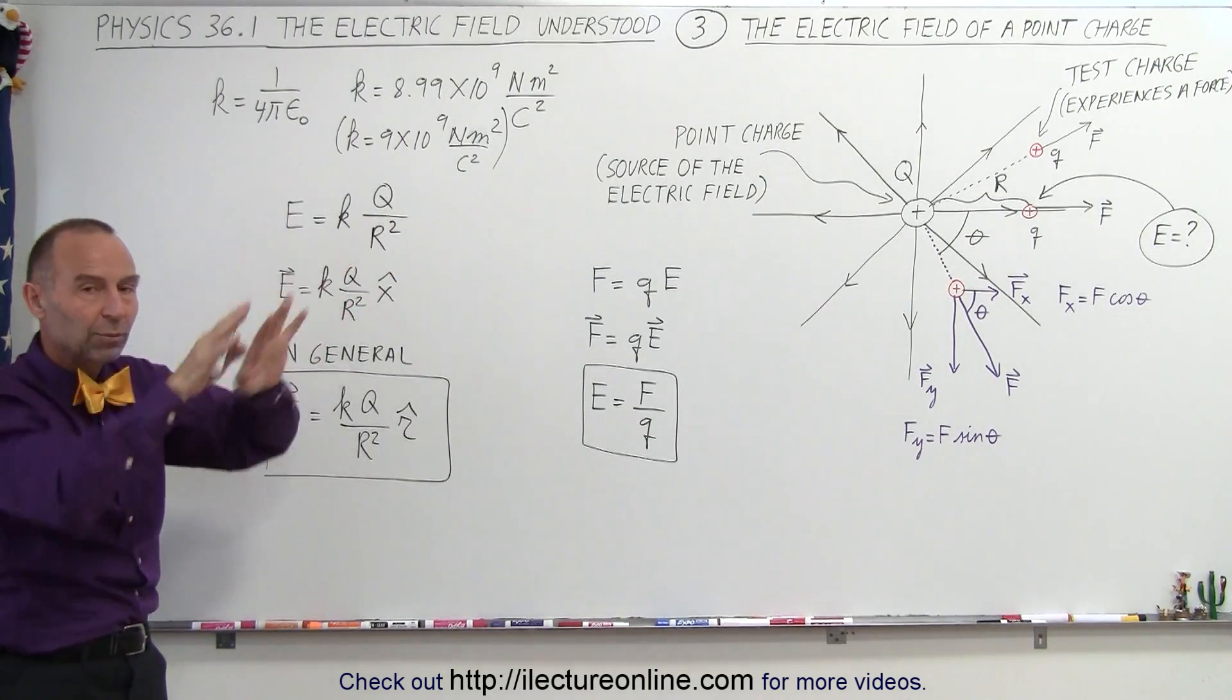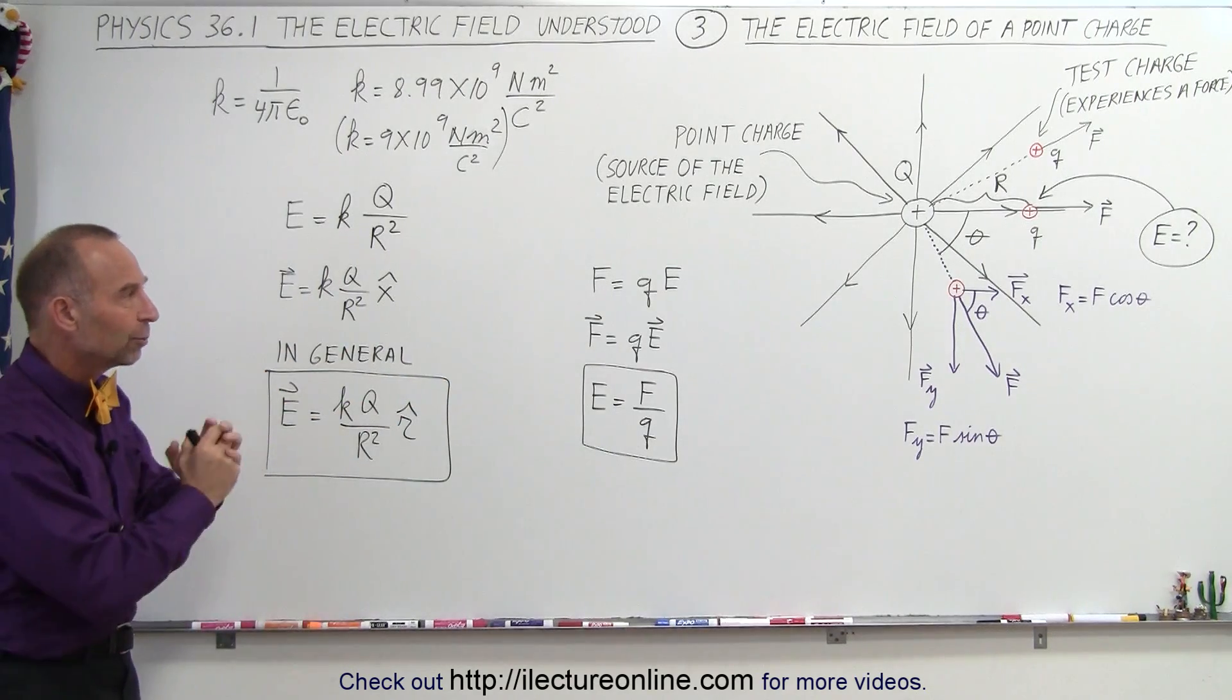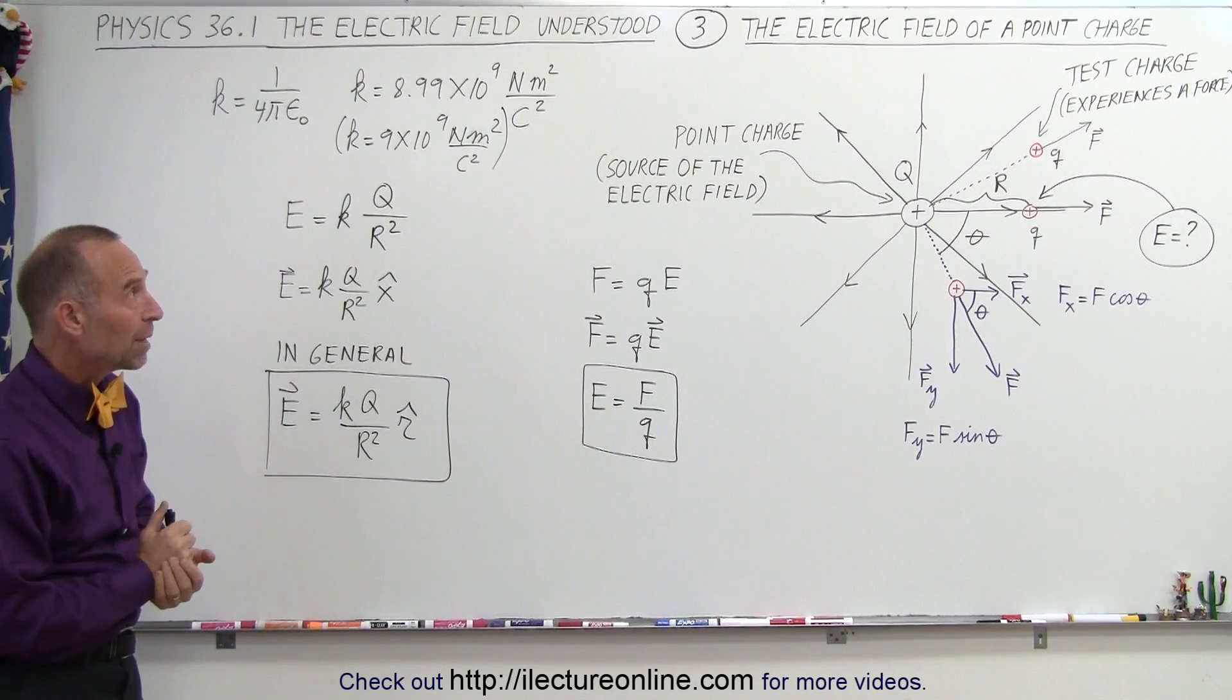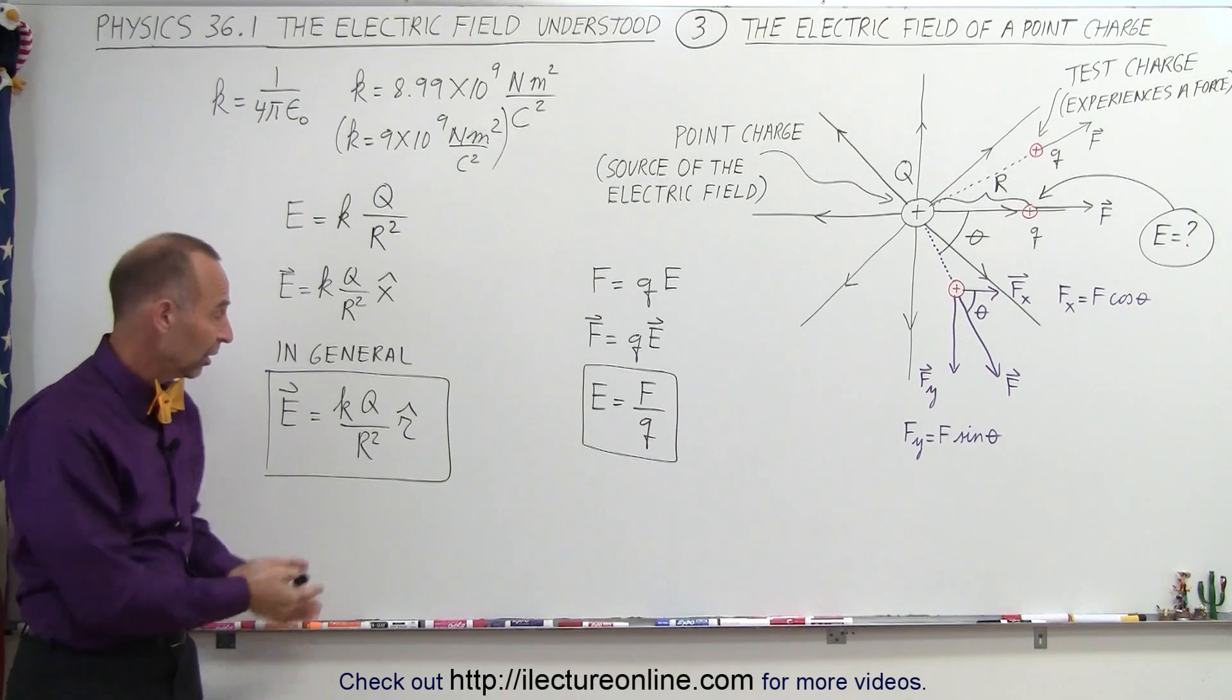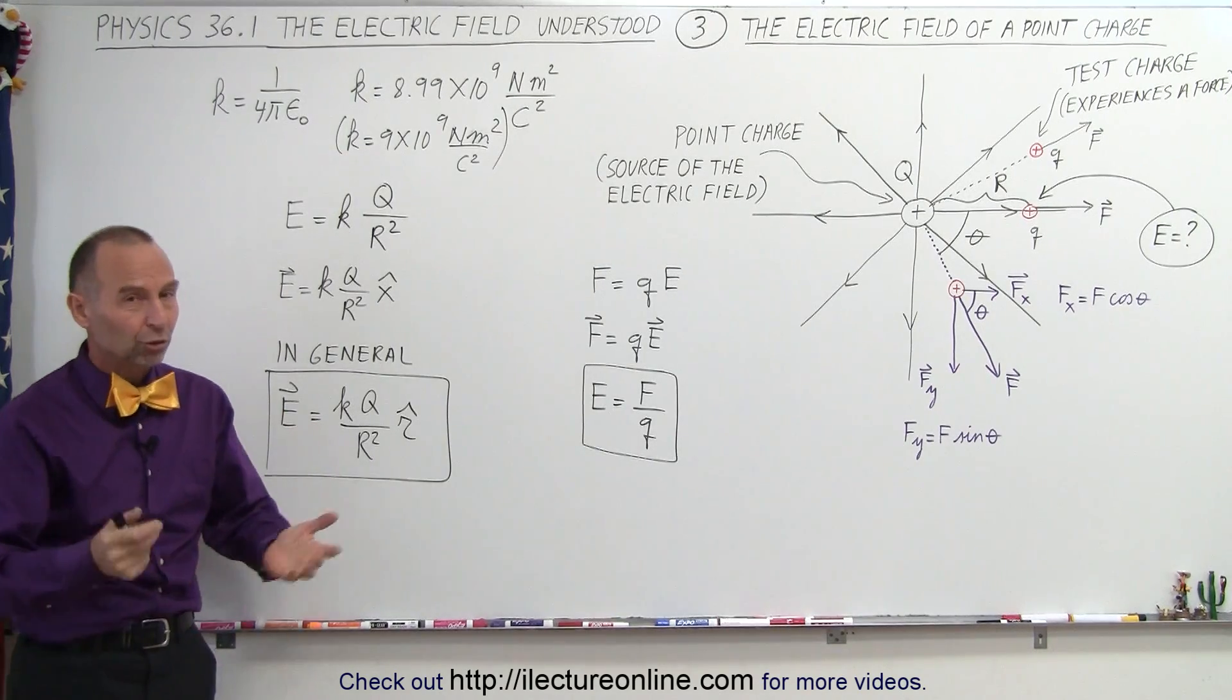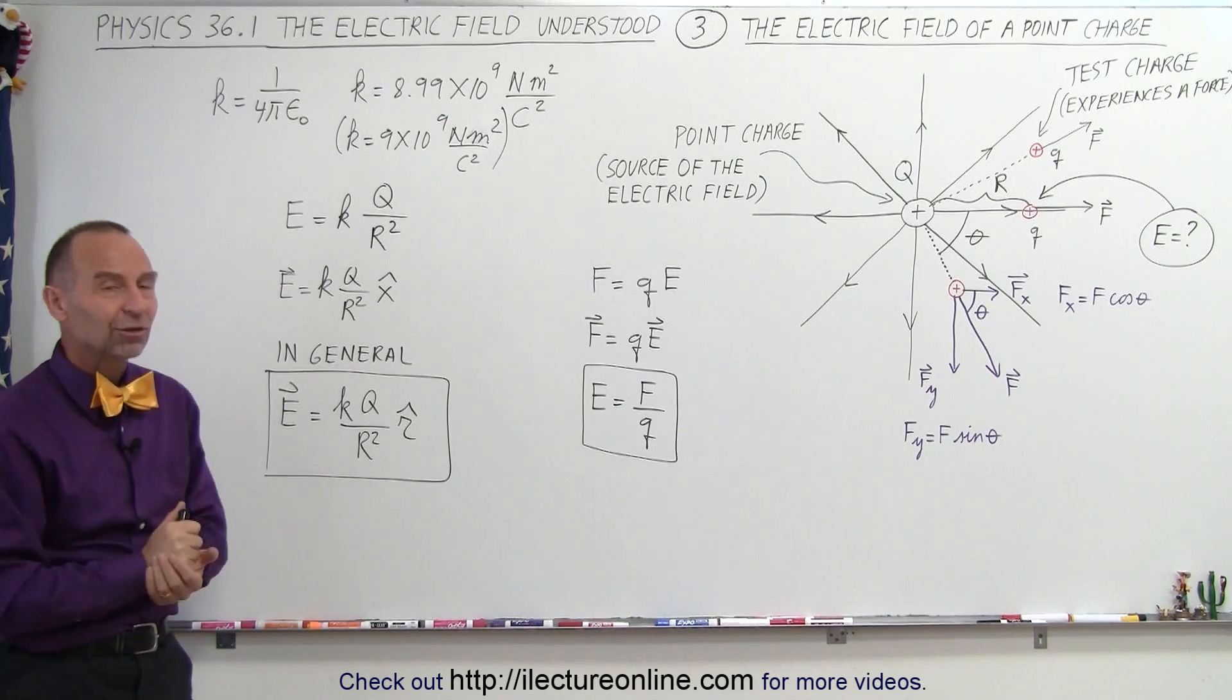And so that would then be, the direction would be radially outward away from the source. And that's what we mean by the electric field of a point charge, and that's how you would calculate it. And we'll show you some examples later how to actually do that.